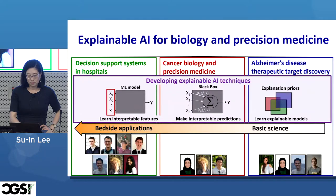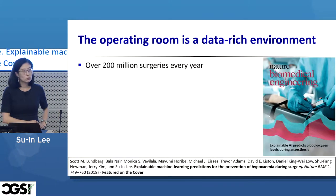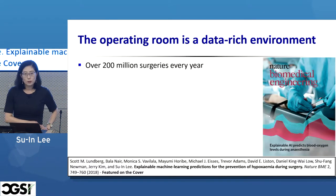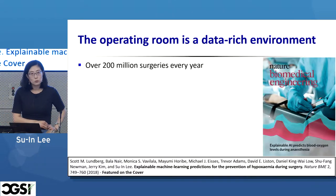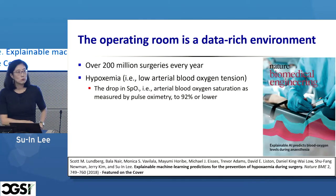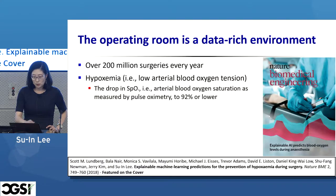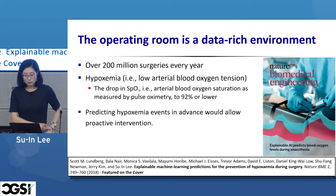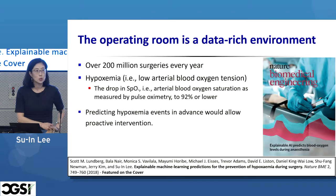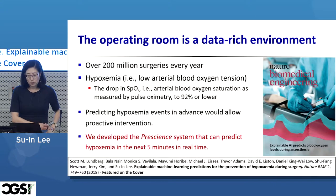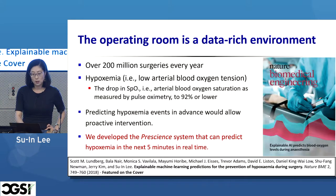Let's talk about the first part — surgery and anesthesia. Surgery and anesthesia are an integrated part of healthcare, but they pose a considerable risk of complications and even death. In this project, we focused on an unwanted physiological condition called hypoxemia — low blood oxygen level — that causes serious patient harm. If hypoxemia can be predicted before it occurs, anesthesiologists can take proactive actions to prevent it. For that, we developed a machine learning technique called Prescience that predicts near-term risk of hypoxemia during surgery and explains the factors that led to that risk.